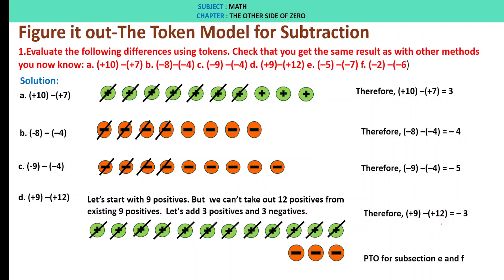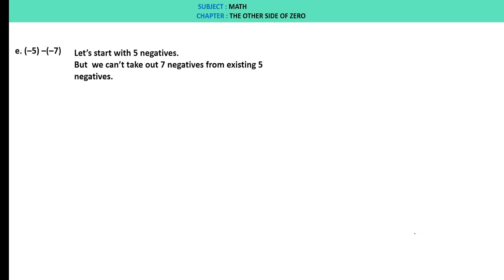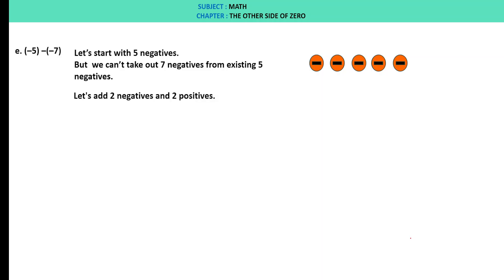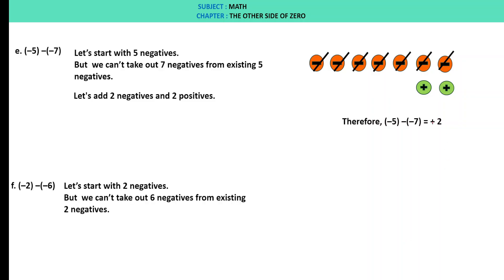E: minus 5 minus of minus 7. Let's start with 5 negatives. But we can't take out 7 negatives from existing 5 negatives. So let's add 2 negatives and 2 positives. Upon taking off 7 negatives, we are left with 2 positives. Therefore, minus 5 minus of minus 7 is plus 2.